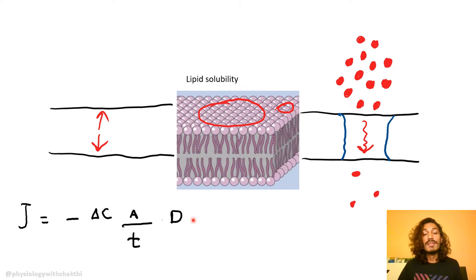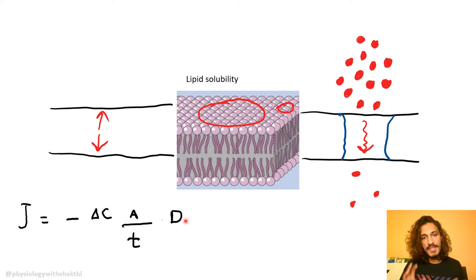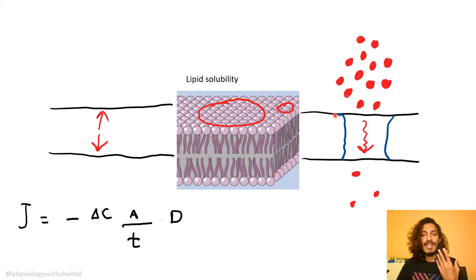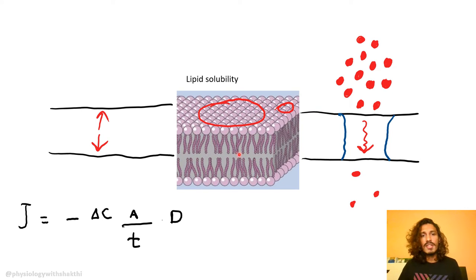Apart from that, there is something called the diffusion coefficient, which encompasses many extra factors that influence diffusion — for example, temperature. If temperature varies, the nature of the membrane changes, along with movement and everything else. Electric charge, pressure difference — there are many factors affecting permeability. All of these together come under the diffusion coefficient. This is your basic Fick's law equation.